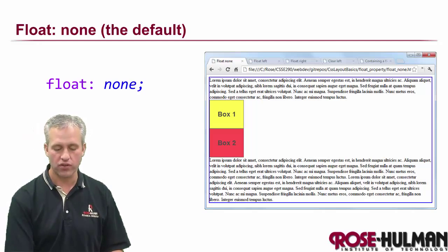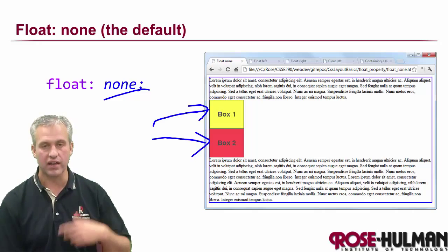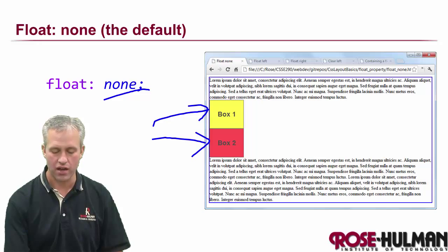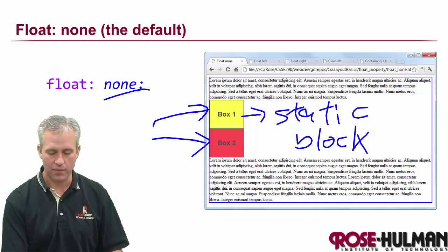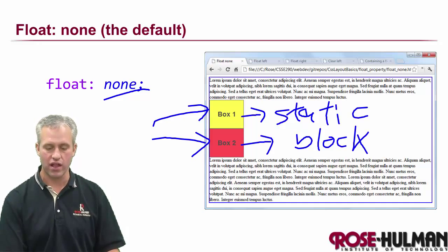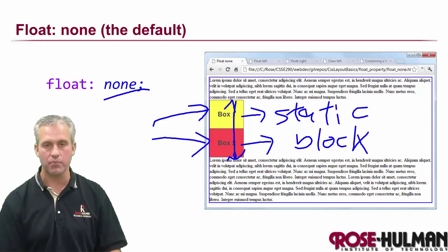The first example is with float none. We've got two boxes here, and we're going to give them the same properties. Right now they have float none, so they've got static set on them and block set on them. You can see that because they've got block, nobody else is on the line. Because they've got static, they're in the flow, taking up their space, and float is none. That's what we've been doing this whole time.